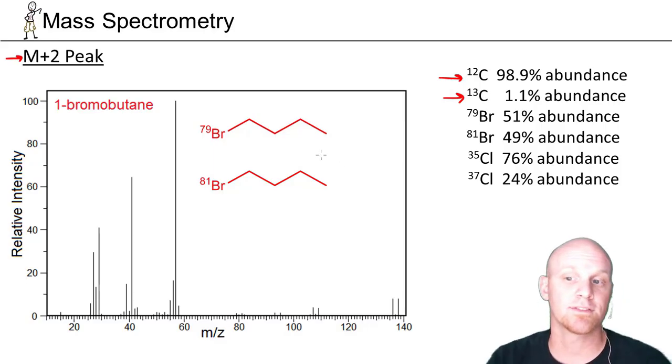However, if you've got bromine or chlorine, that's actually going to be very different. Bromine is very different from most other elements in that instead of having one major isotope, it actually has two. If you look at your average atomic mass on the periodic table for bromine, it's 79.9, somewhere close to 80, but you don't really have bromine-80. You've got bromine-79 and bromine-81 in close to a 50-50 ratio of both.